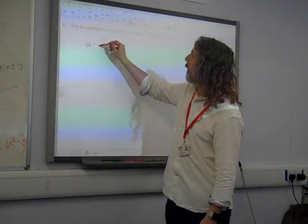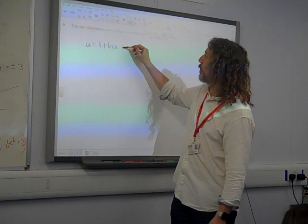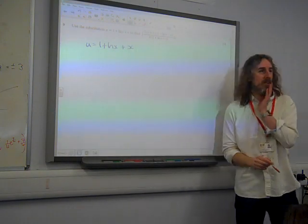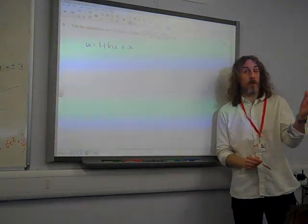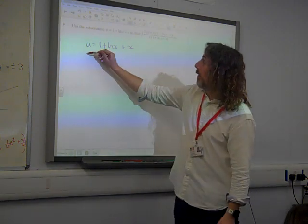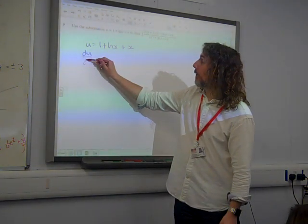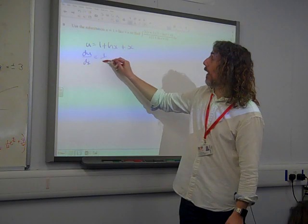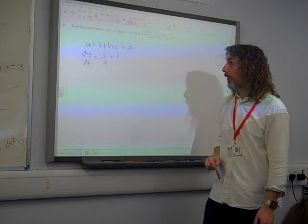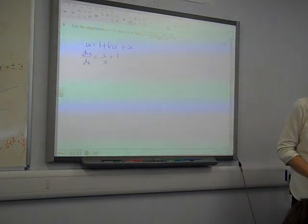So u equals 1 plus ln(x) plus x. We're going to need to find du by dx because we're going to have to use that in our substitution. Du by dx is 1 over x plus 1. So that gives us something to go on with that.